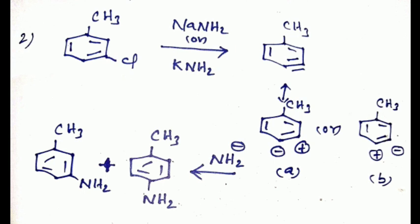In the second option, the para position has positive charge and the meta position has negative charge. The negative charge is closer to the substituent, so option A is preferred. Since both options are possible, we get two products: meta-aminotoluene and para-aminotoluene.